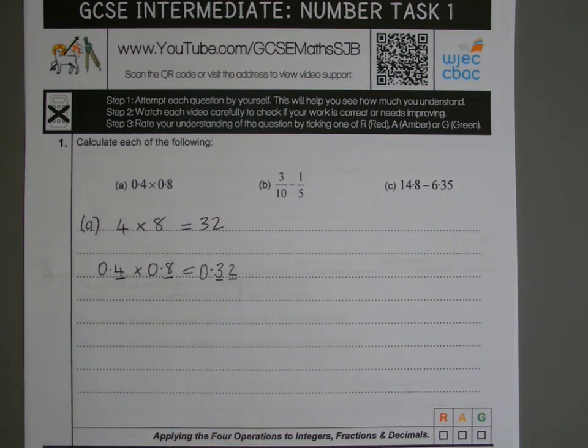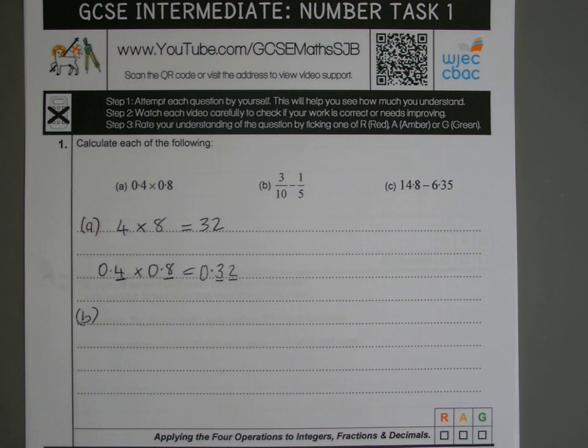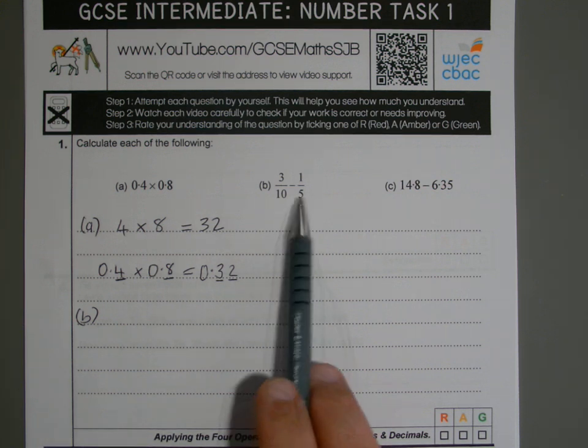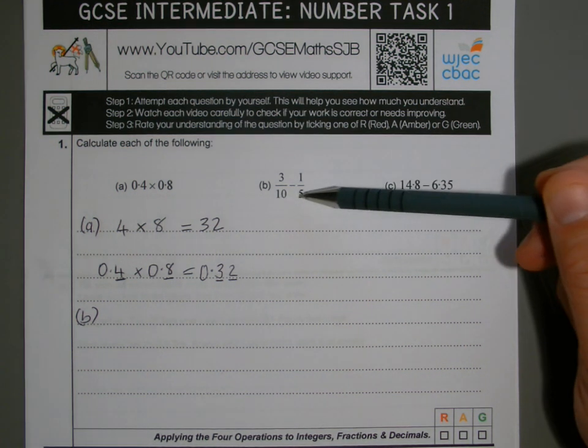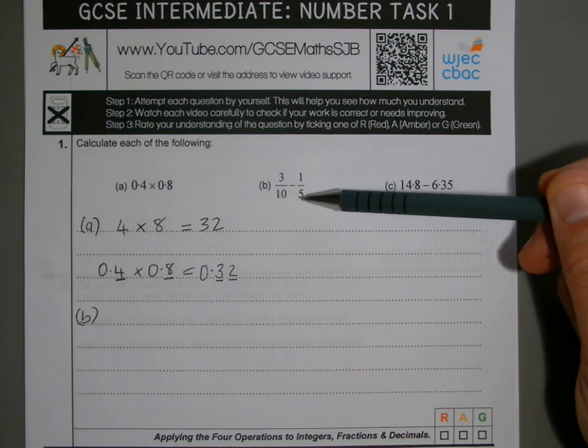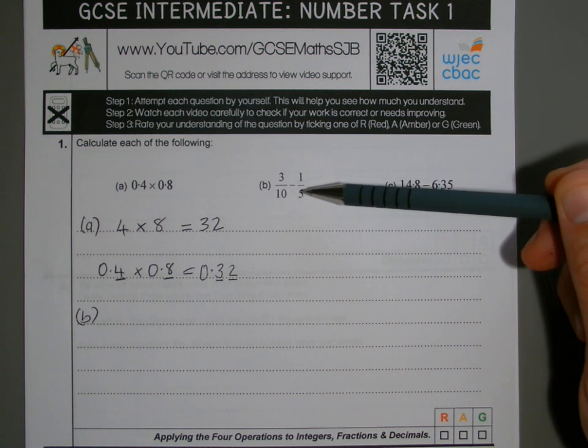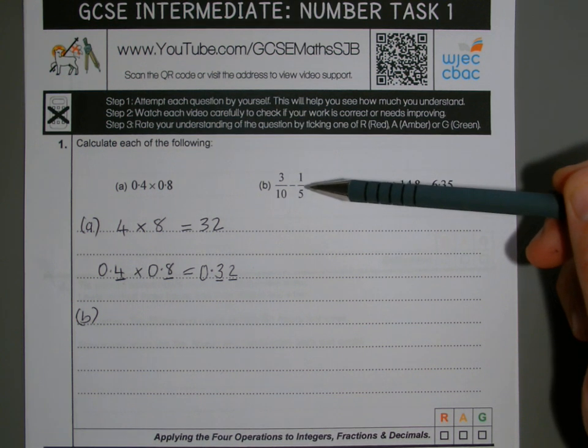So with B, we've got to subtract one fraction from another. Now when you're taking away fractions, or when you're adding or taking away, you've always got to ensure that you have a common denominator. In other words, the value on the bottom of the fractions must be the same when you take away. Now, they're not the same here. So we need to change one of the fractions.